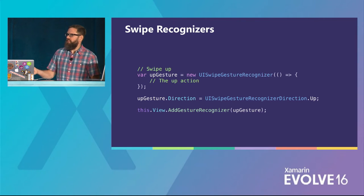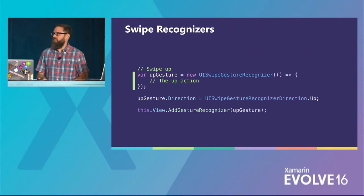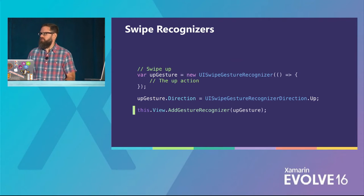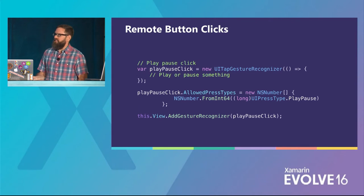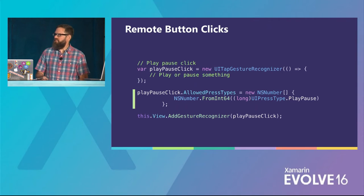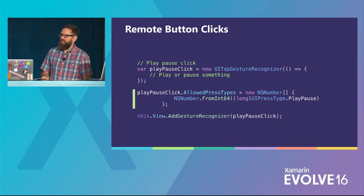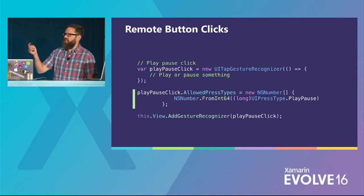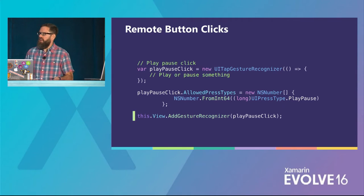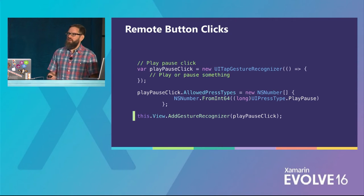To handle events from the remote in code: for a touchpad click it looks like a touch-up inside event — handle primaryActionTriggered on a button. For a swipe recognizer on the touch surface, use UISwipeGestureRecognizer, pass the action and direction (e.g., up), then add it to the view. For a remote button click, use UITapGestureRecognizer with an allowedPressTypes array using the UIPressType enumeration — play, pause, menu, or directional values like up, down, left, right — then add it to the view.